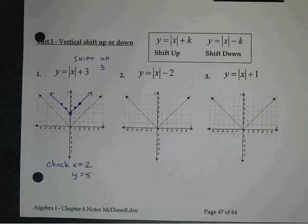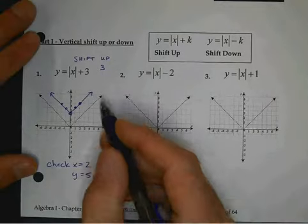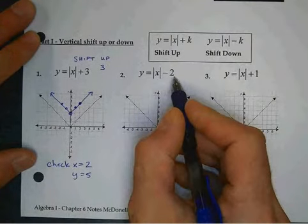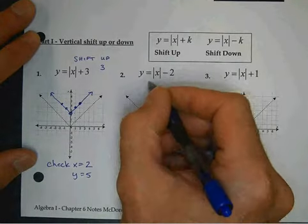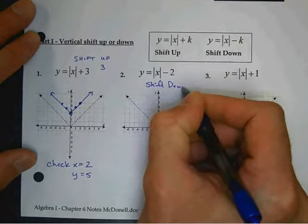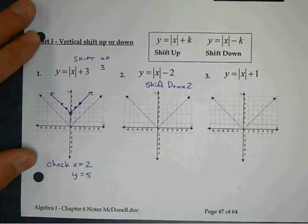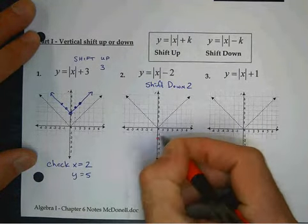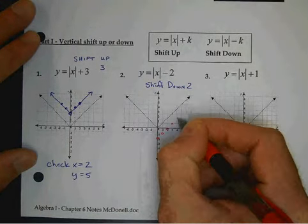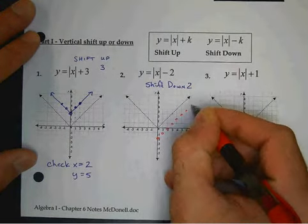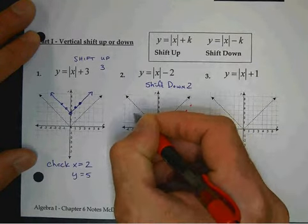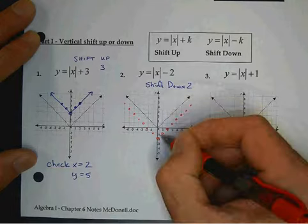Once again, when it's a plus or a minus outside, it's just a shift up or down. So, this one has the absolute value of x minus 2. So, that's going to be a shift down 2. So, take each of your values and go down two dots. Should end up something like that. Draw your line.